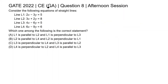This is question 8 of the Civil Engineering General Aptitude section of GATE 2022 afternoon session. Consider the following equations of straight lines: Line L1: 2x − 3y = 5, Line L2: 3x + 2y = 8, Line L3: 4x − 6y = 5, Line L4: 6x − 9y = 6. Which one among the following is the correct statement?